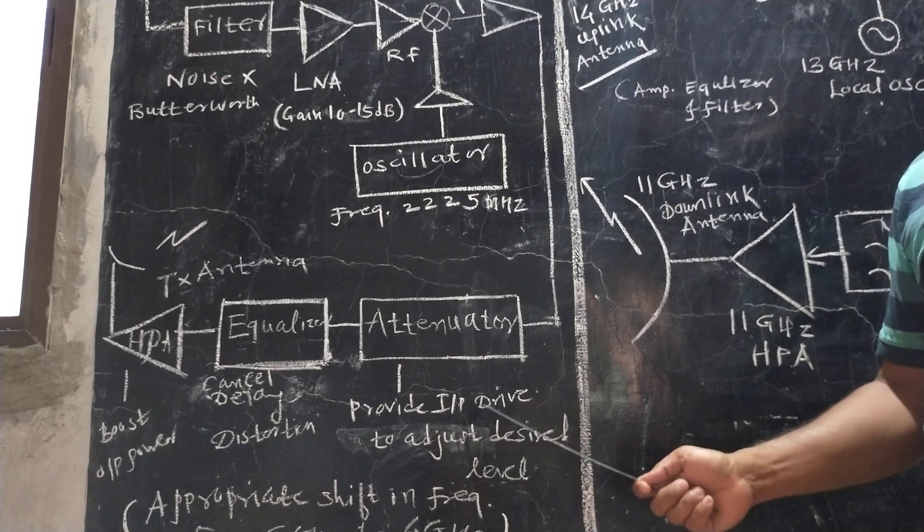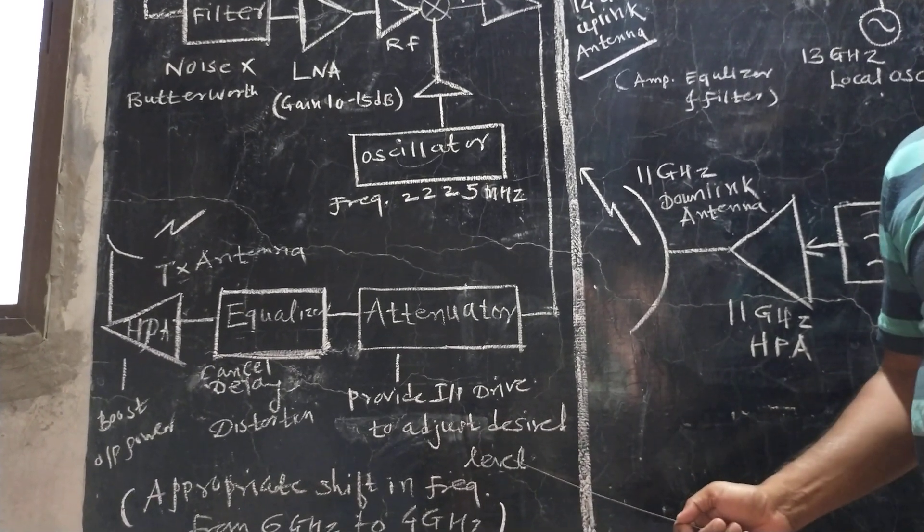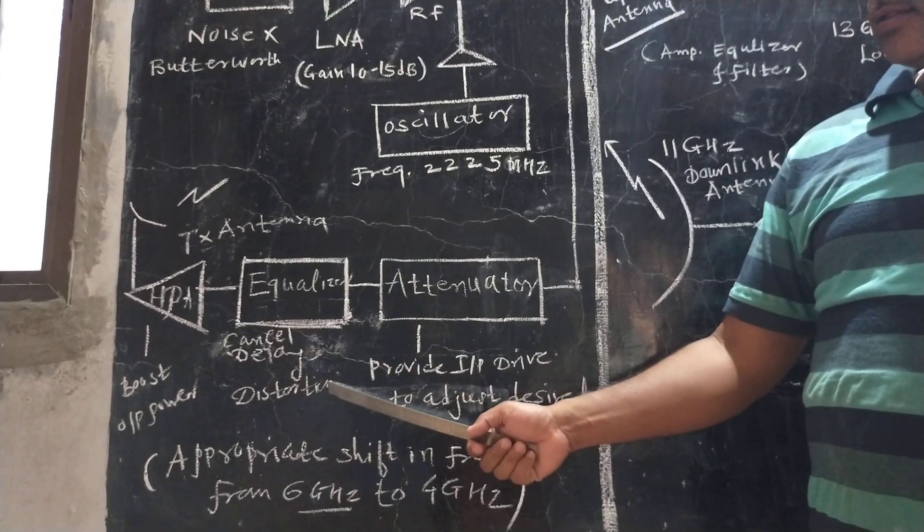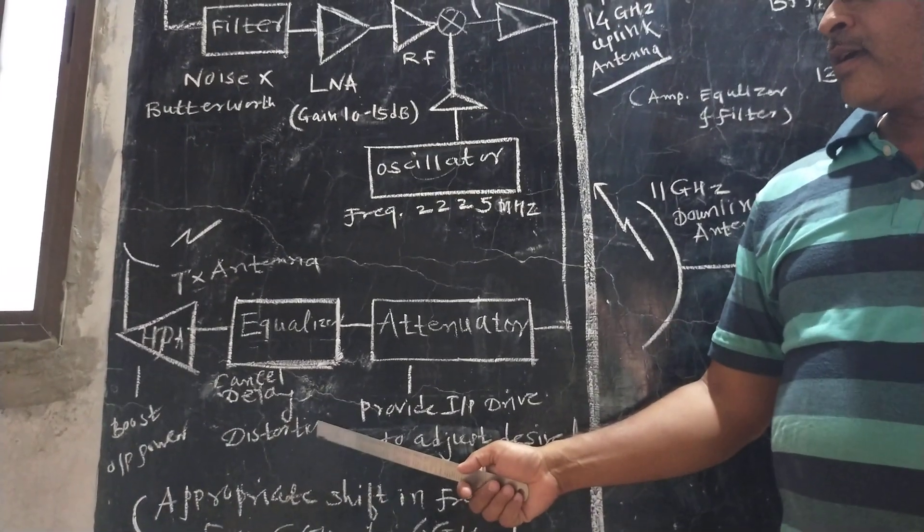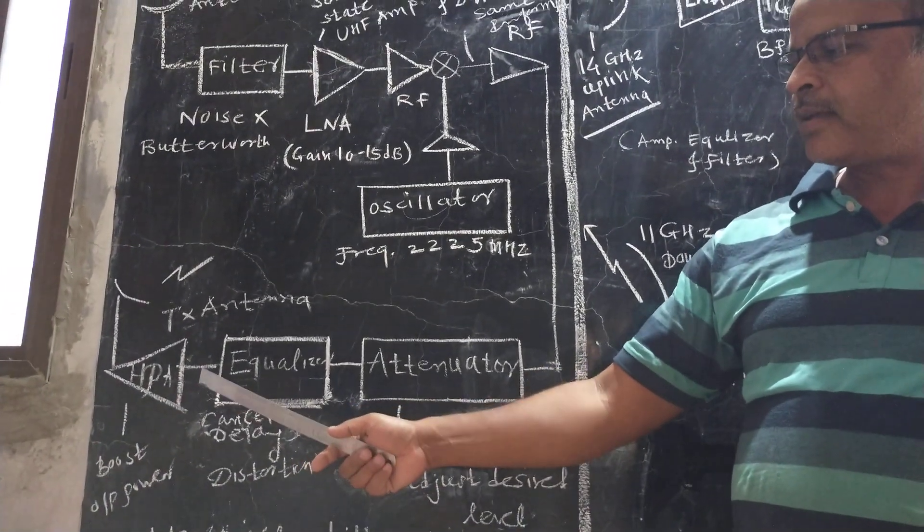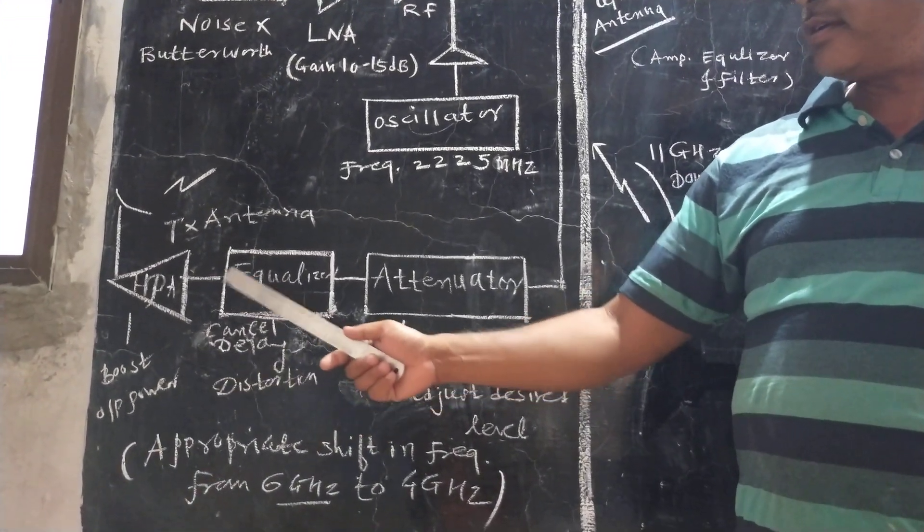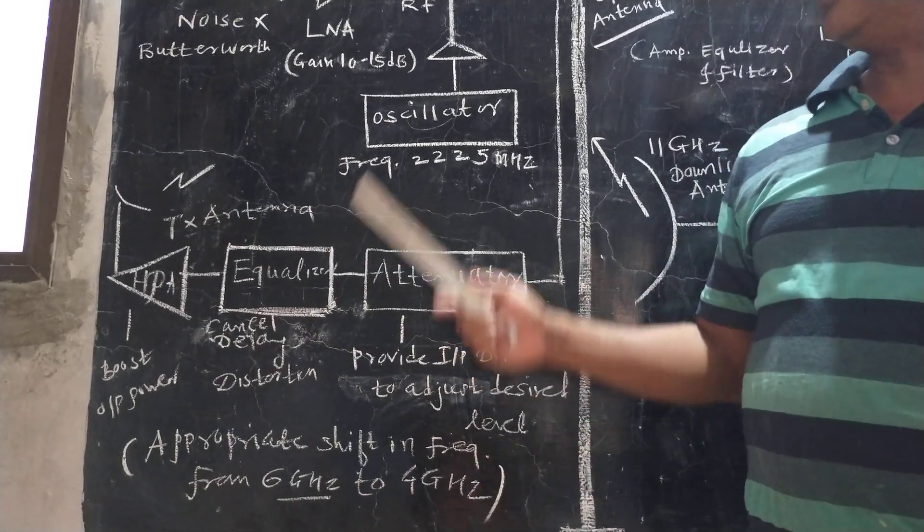The attenuator provides input drive to adjust the desired level. The equalizer is used to cancel delay distortion in the filter. A high power amplifier is used to boost the output power of the equalizer, and the signal is transmitted.